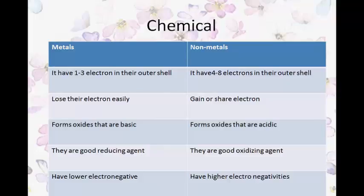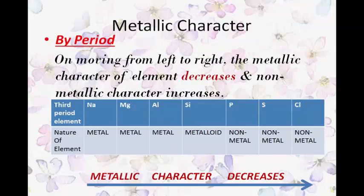Let's understand metallic character with respect to group and period. On moving from left to right in a period, the metallic character of an element decreases — that is, non-metallic character increases. On the left side of a period we have metals, on the right side we have non-metals, and some elements in between are metalloids, which we also call semiconductors.